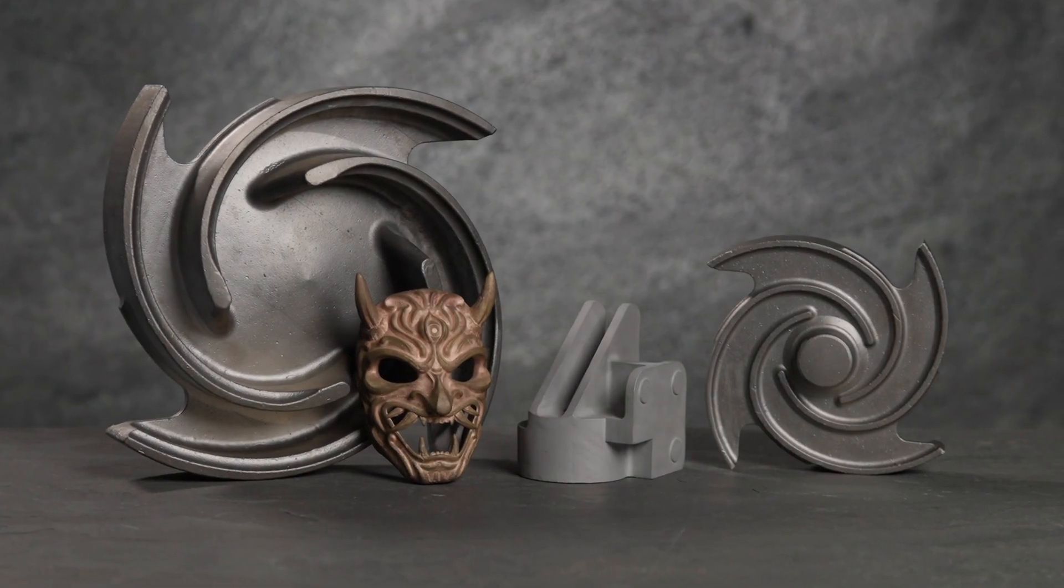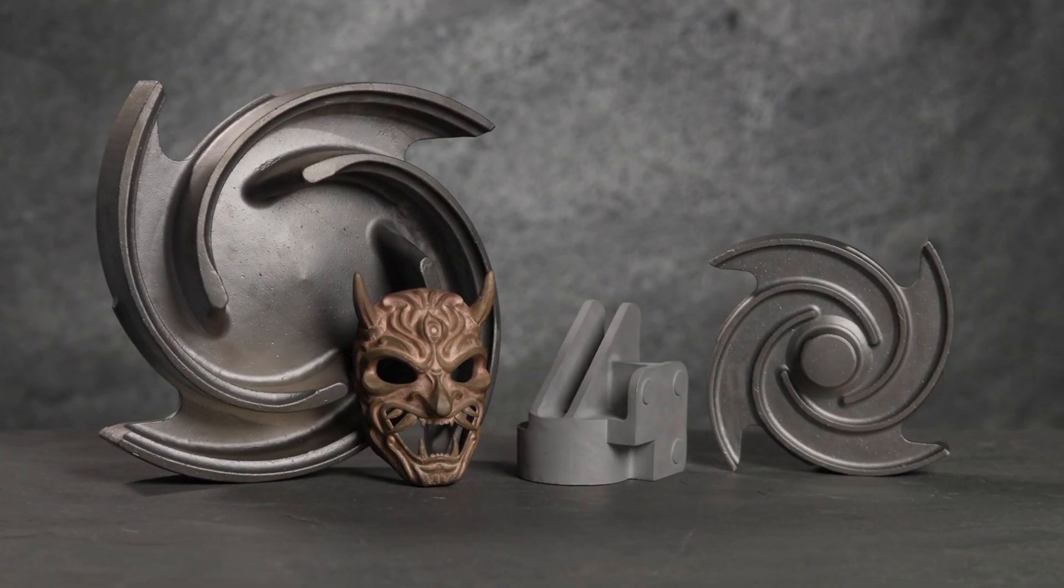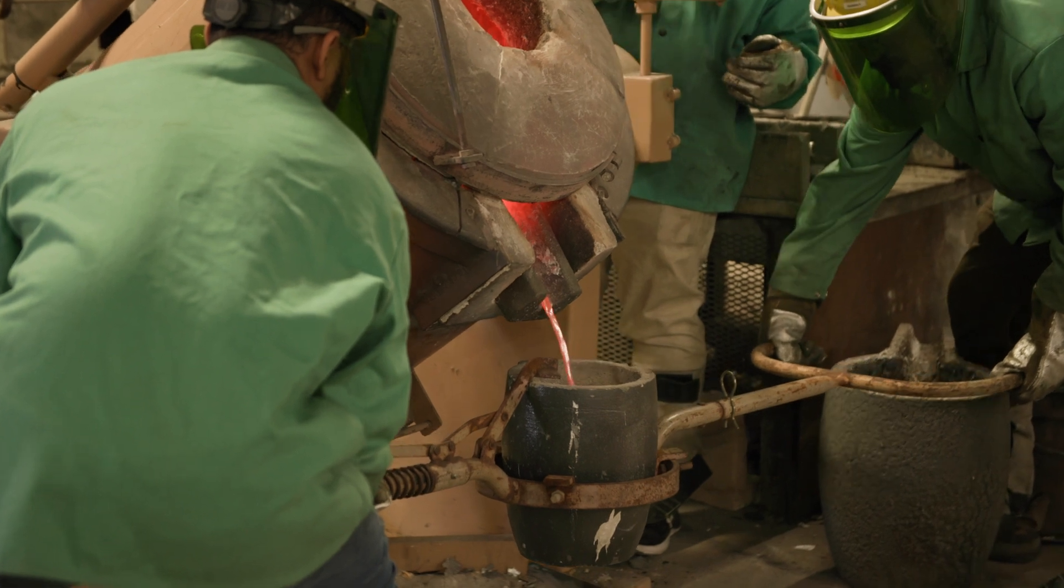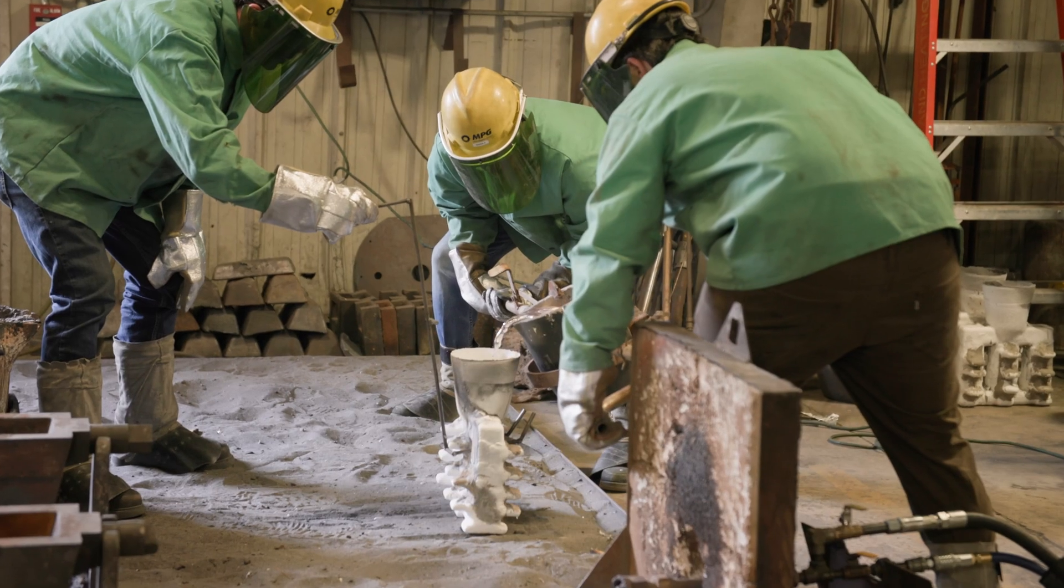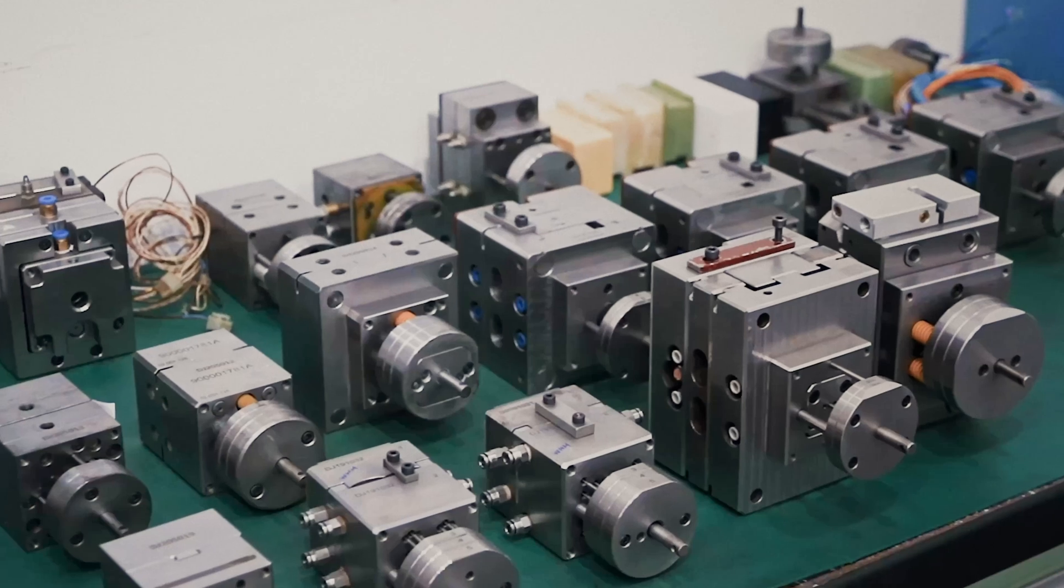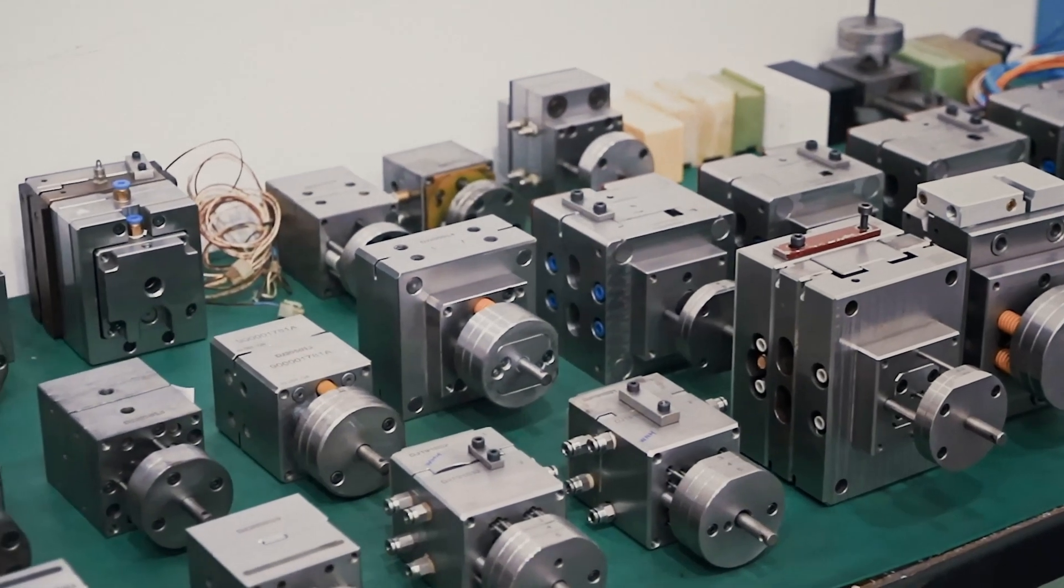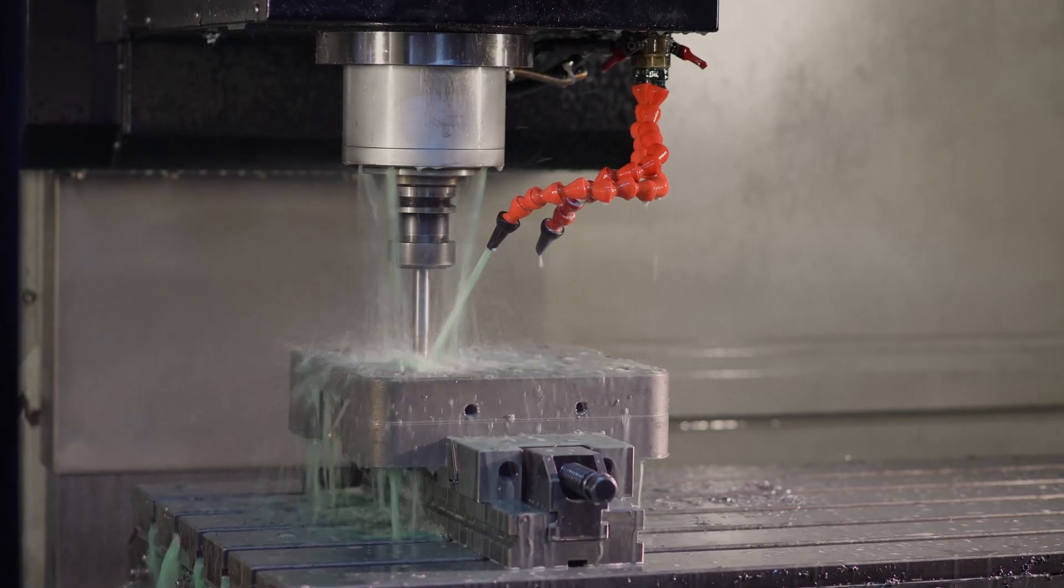Investment casting has been used to create metal parts for thousands of years. Pouring molten metal into ceramic shells, investment casting typically uses wax patterns made from molds that can be expensive and time-intensive to make.